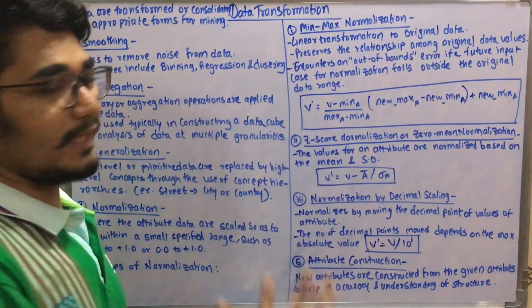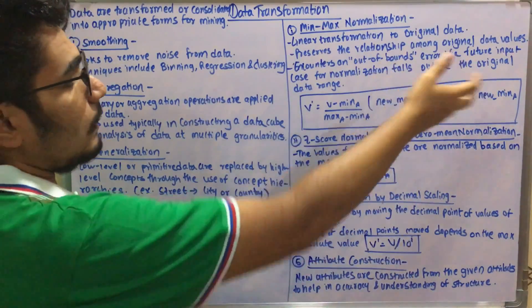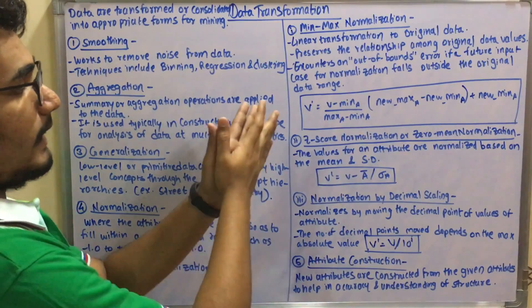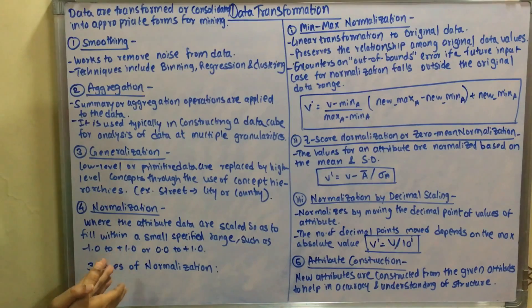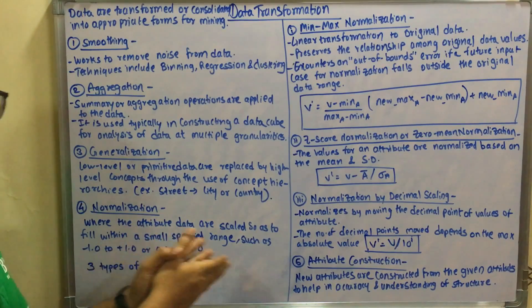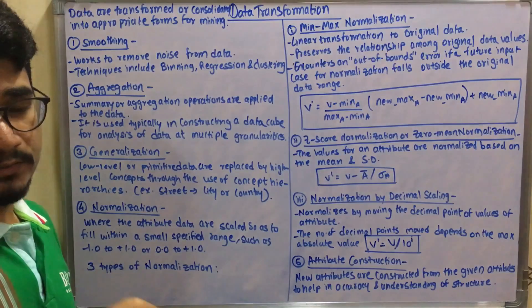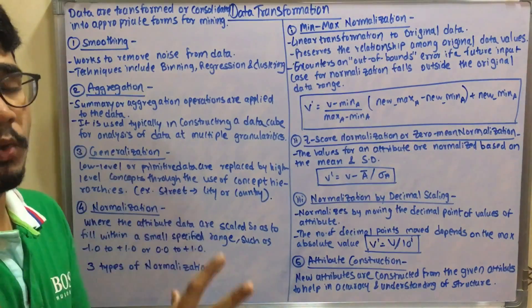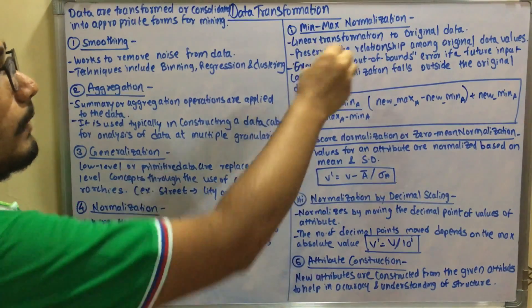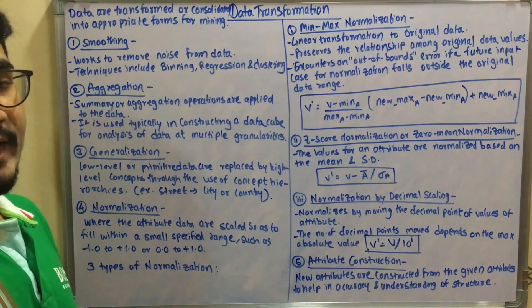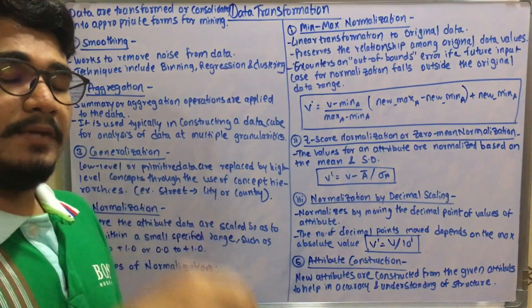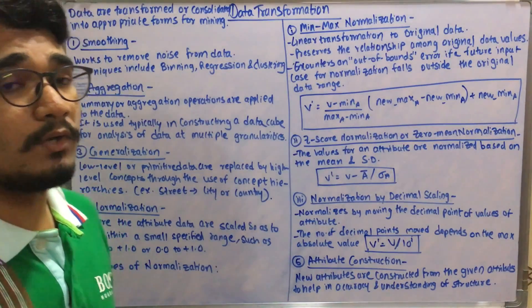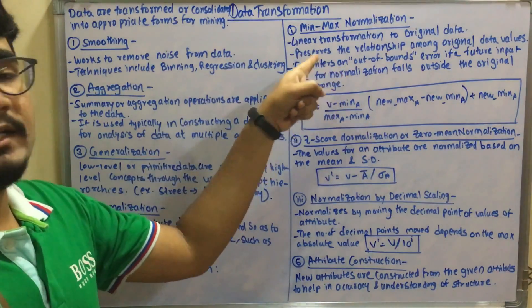Next, it encounters an out of bounds error if a future input case for normalization falls outside the original data range. Like if you have consolidated your data to minus 1.0 to plus 1.0 or 0.0 to 1.0, if any errors fall outside this category then it throws an out of bounds error, similar to array index out of bounds exception in Java.